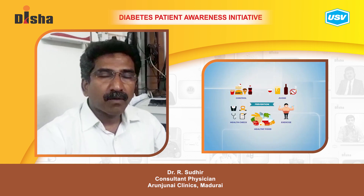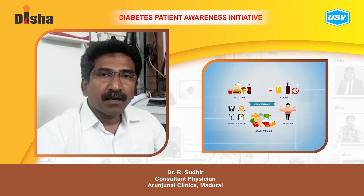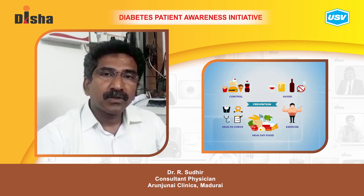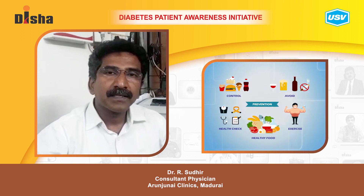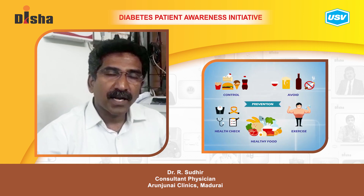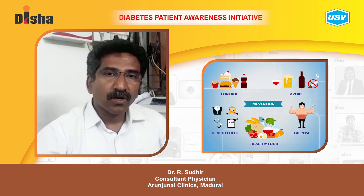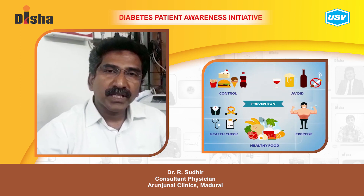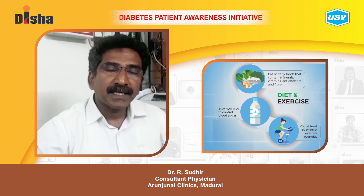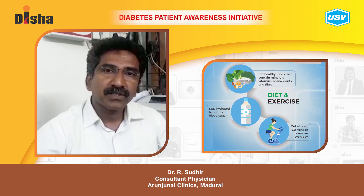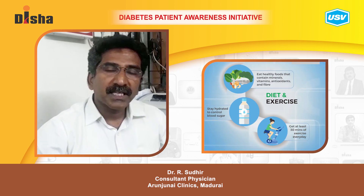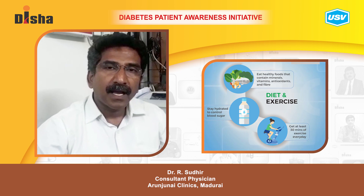Prevention is probably a distinct possibility if we can adhere to a good lifestyle. We need to indulge in regular exercise at least 4–5 days a week — a brisk walk of 30 minutes a day should be adequate. Dietary modifications are also needed: we have to scale off sugars, sweets, fried foods, and foods rich in calories and fats.